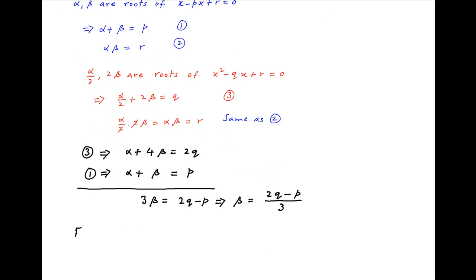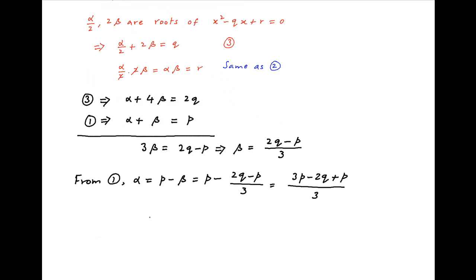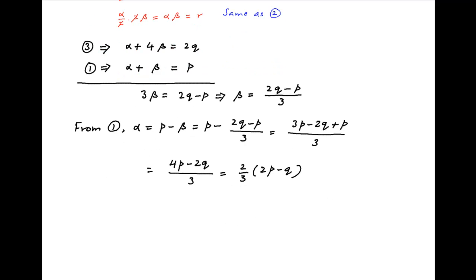From result 1, alpha is equal to p minus beta. Substituting the value of beta, we get p minus 2q minus p upon 3, which is equal to 3p minus 2q plus p upon 3. Therefore alpha is equal to 4p minus 2q upon 3, which can be written as 2 upon 3 times in brackets 2p minus q. So alpha is equal to 2 upon 3 times 2p minus q, and beta is equal to 2q minus p upon 3.